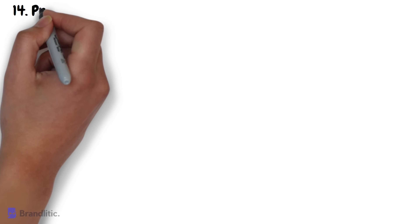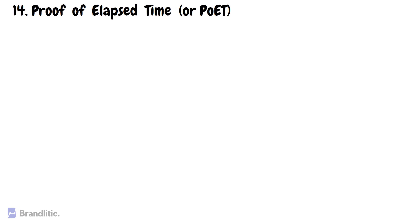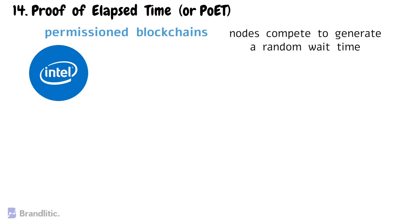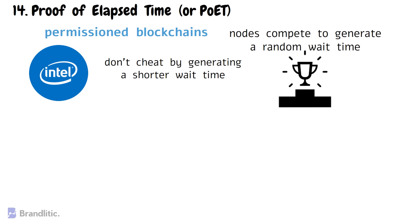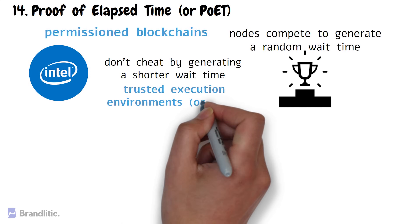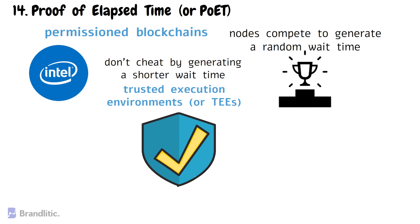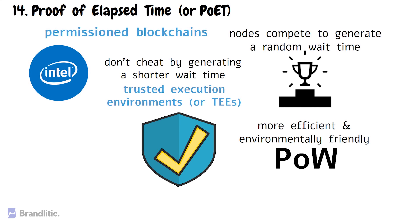Number fourteen: Proof of Elapsed Time, or PoET. This is a consensus algorithm primarily designed for permissioned blockchains, developed by Intel. Nodes compete to generate a random wait time, and the node that completes the wait time first is chosen to create the next block. To ensure nodes don't cheat by generating shorter wait times, PoET uses special hardware called Trusted Execution Environments, or TEEs, that create a random wait time and protect it from manipulation. PoET is a more efficient and environment-friendly consensus algorithm than Proof of Work because it doesn't require complex mathematical calculations — instead, it relies on the random wait time generated by the TEEs.